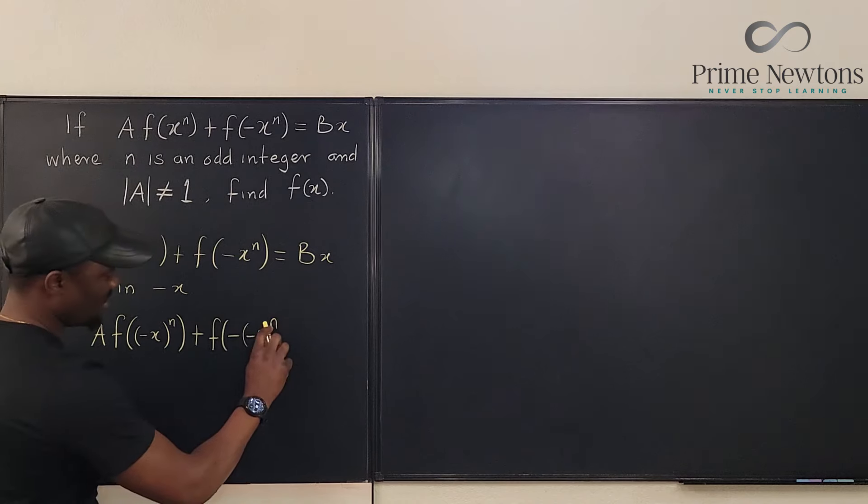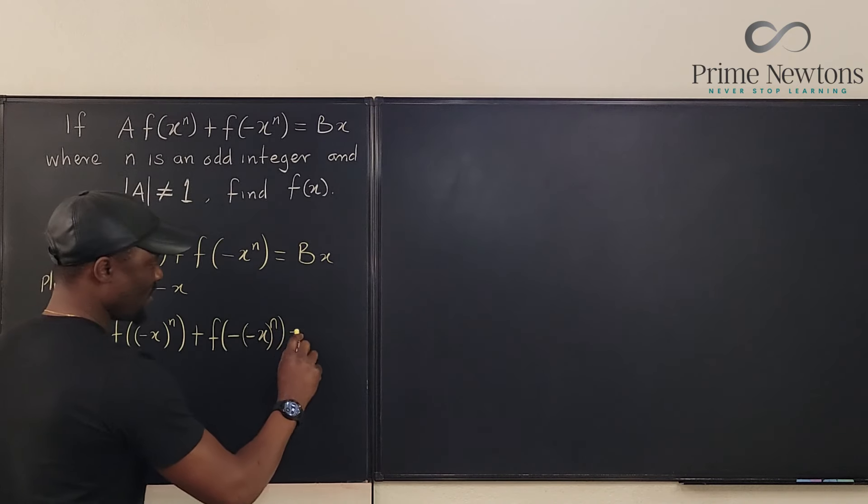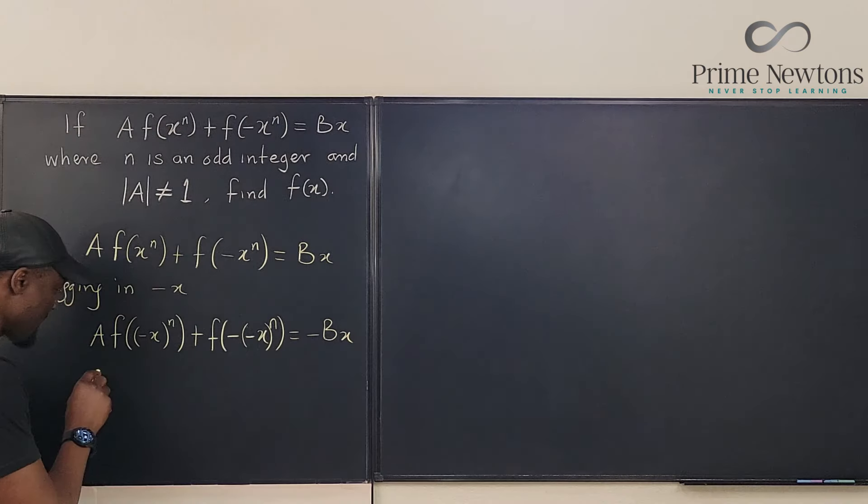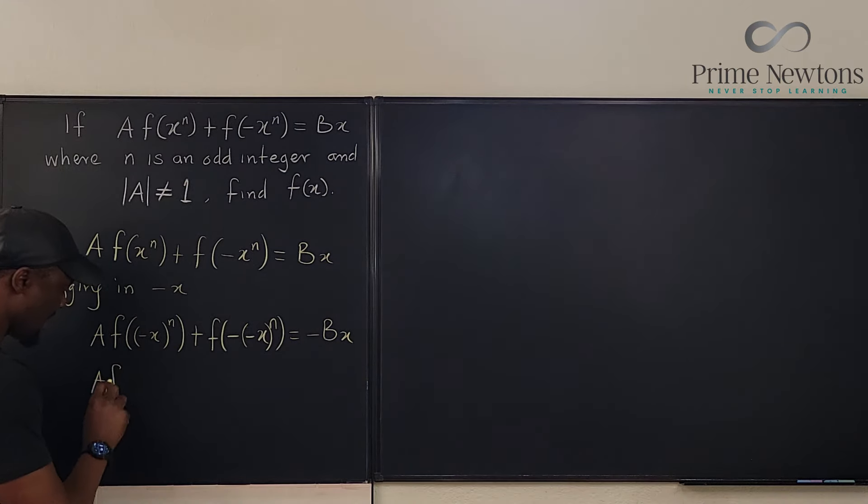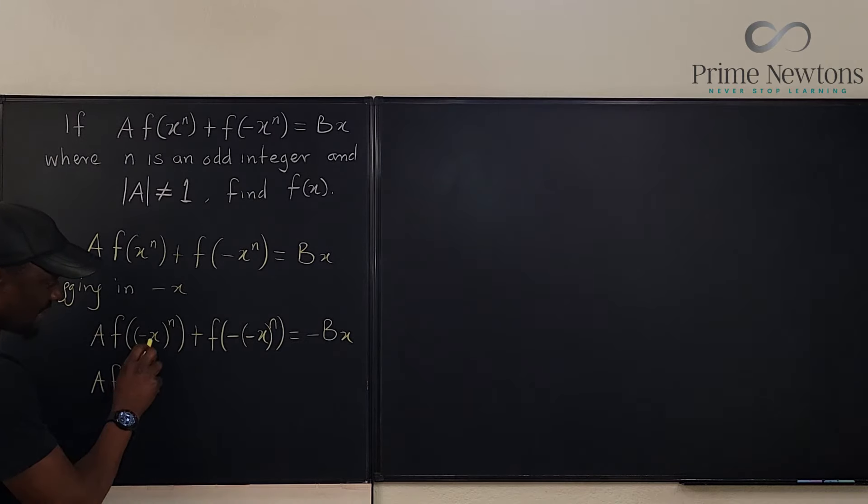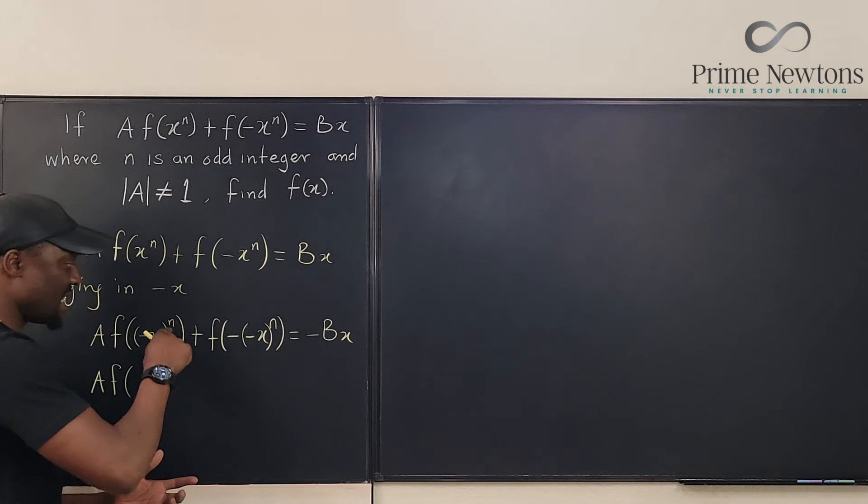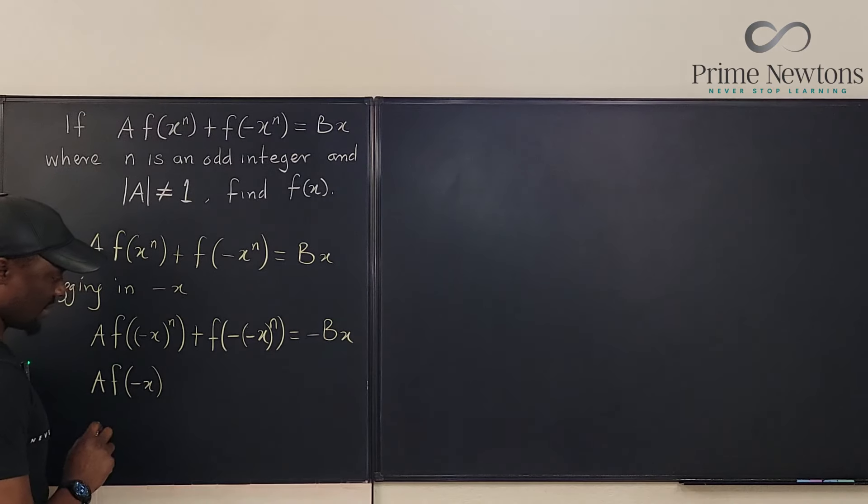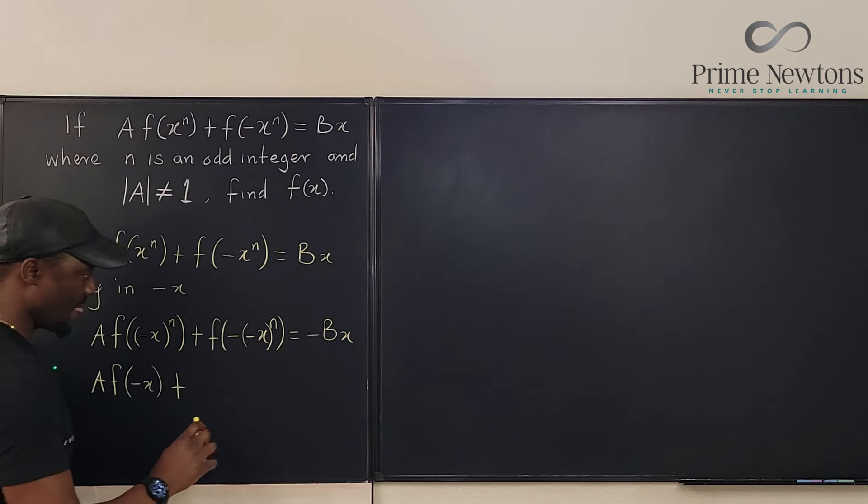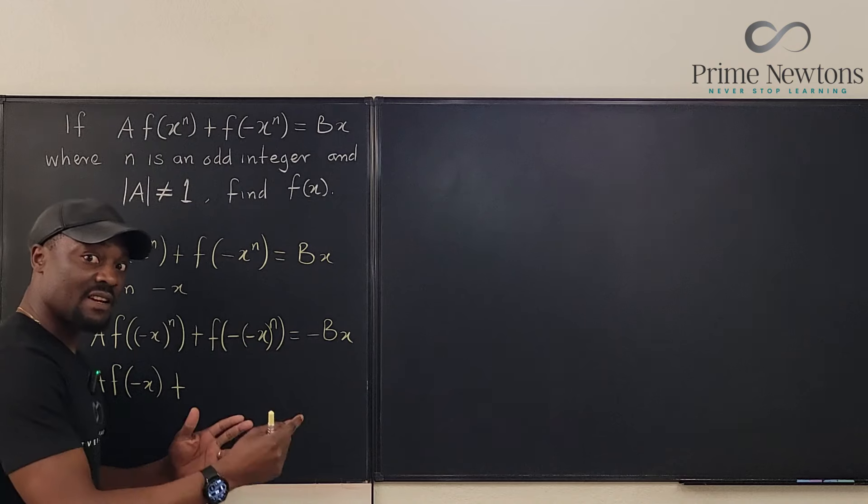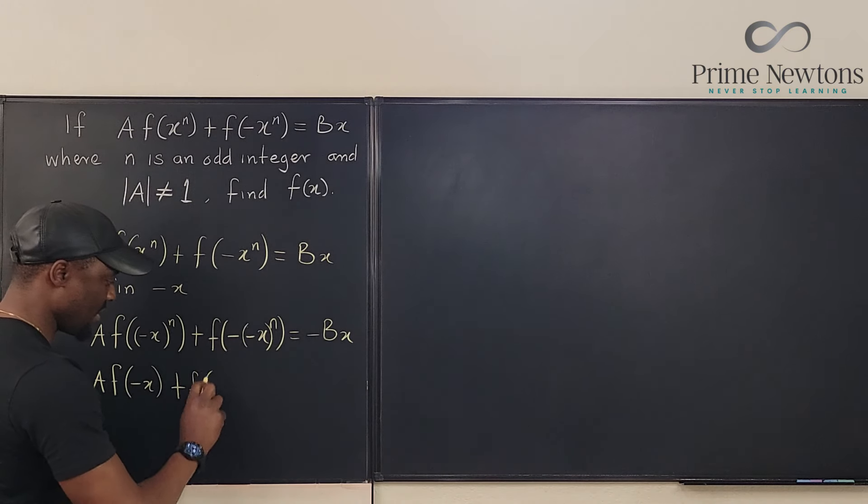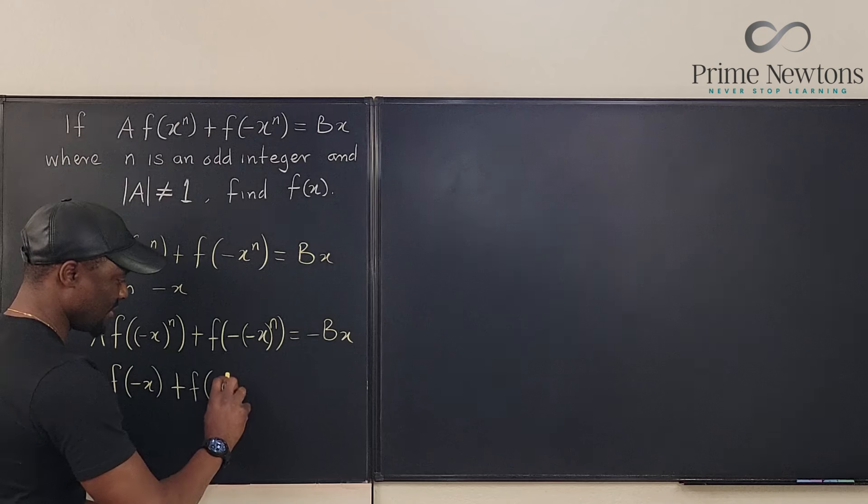This is going to be negative x raised to power n, like this. And then this would be negative, and then this would be negative, so x raised to power n, will be equal to b times negative x, which is negative bx. So A times f(-x)^n, because n is an odd integer, it's just going to be negative x. But if you multiply again by negative, it becomes f(x)^n.